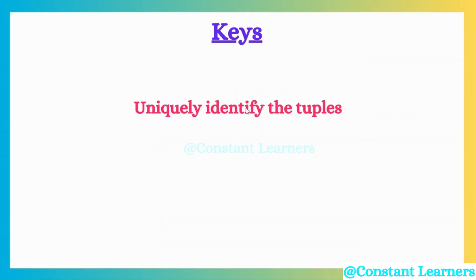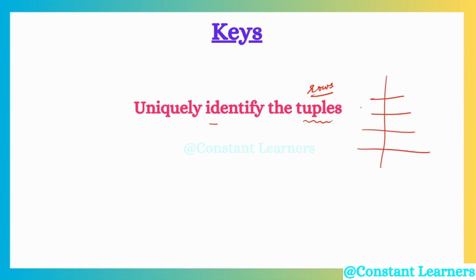SID is helping us to uniquely identify the records or rows in our table, and this is nothing but a key. Keys help us to uniquely identify the tuples — tuples are the rows. So a key is a unique identifier that helps us to identify the data of a particular record or a particular row.